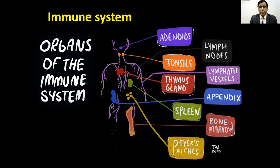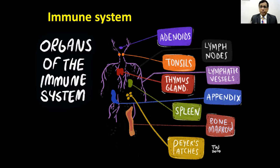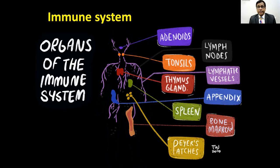These trigger immune responses. The immune system organs where antibodies are found include tonsils, lymph nodes, thymus, appendix, spleen, bone marrow, adenoids, and more. Together we call them the immune system.